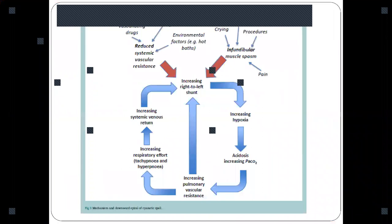Cyanotic spells basically occur because of increased right to left shunt. Increased blood from the right ventricle going to the left ventricle leads to increase in right to left shunt, and thus mixture of this deoxygenated blood of the right ventricle with the oxygenated blood of the left ventricle leads to increased hypoxia and acidosis, which increases pulmonary vascular resistance, increases respiratory effort, tachypnea, and hyperpnea.